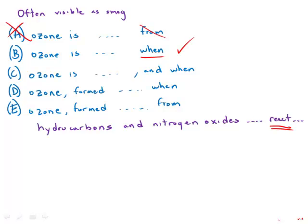Let's look at the others and see first of all how many are grammatically correct. C: ozone is formed in the atmosphere. And then we have 'and when.' And so what's odd about this—we have subject, verb, and then 'and when,' subject, verb.